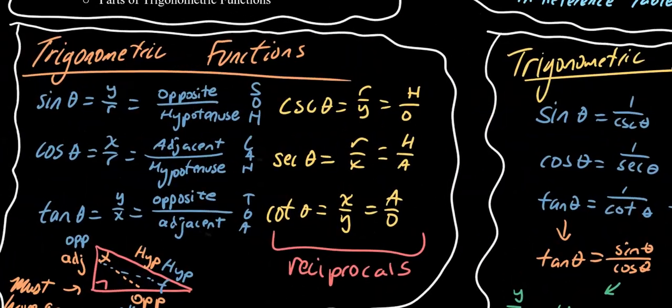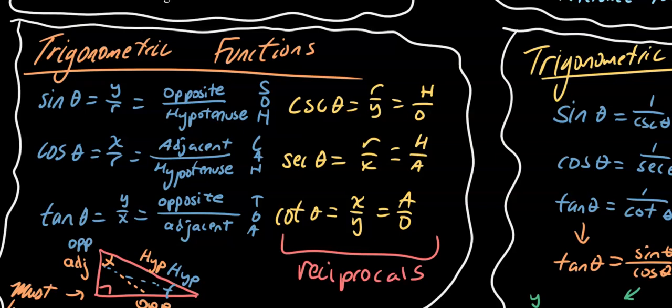Now let's get into some real trig. Algebra 2 involves the three primary trig functions: sine, cosine, and tangent, as well as the reciprocals: cosecant, secant, and cotangent. These are a little bit less common, but you still need to memorize all of these functions. Most of this trig unit is memorization.